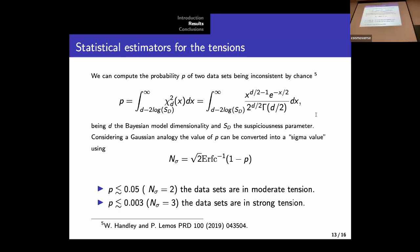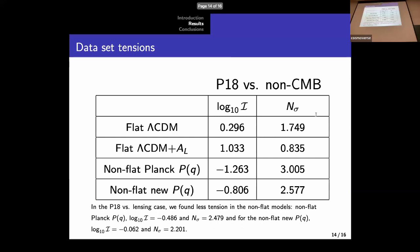And we can obtain this expression for the probability that tells us the probability that two datasets being consistent by chance. Also, if we consider an analysis with... By considering a Gaussian analogy, you can transform this probability into a sigma tension. So more or less, we can say that we obtain a moderate tension for two sigma, and a strong tension for three sigma.